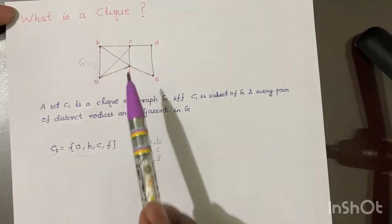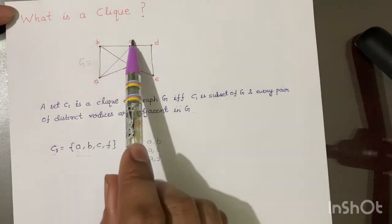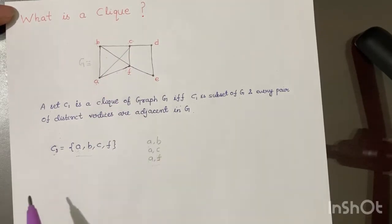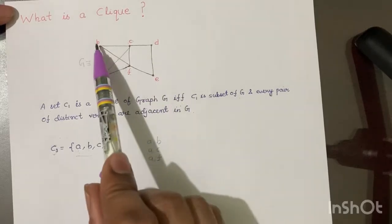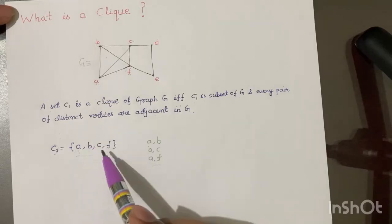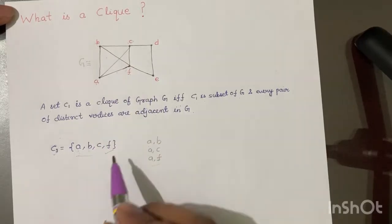So A and B, A and C, A and F, they are adjacent to each other. Similarly B and A, B and C, B and F, they are adjacent to each other. So this subset of G will be called a clique.